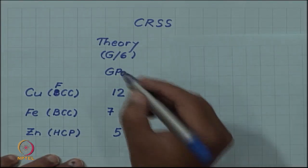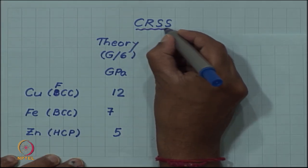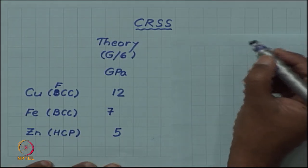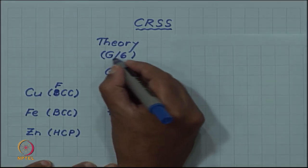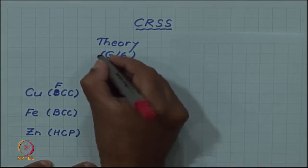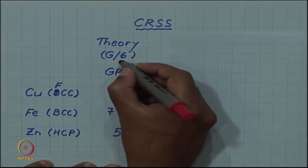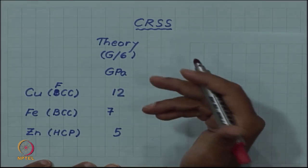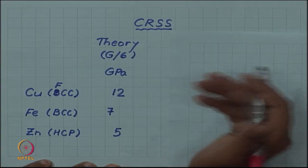So, people started taking interest in the values of critical resolved shear stress and then a theoretical estimate was proposed which was g by 6, which is simply g is the shear modulus. So, shear modulus divided by 6 was supposed to be the theoretical value of critical resolved shear stress.